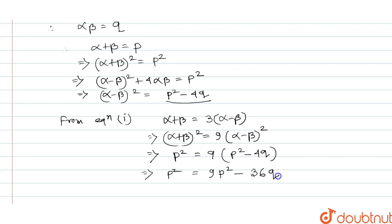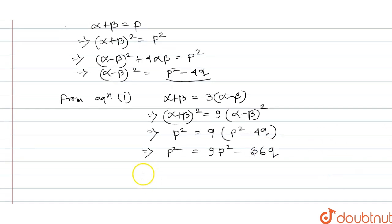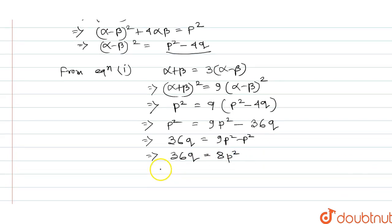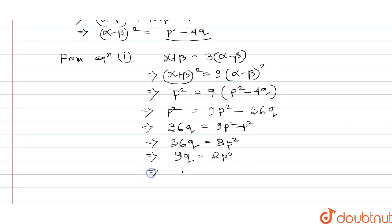So p squared equals 9p squared minus 36q. Rearranging: 36q equals 9p squared minus p squared, which gives 36q equals 8p squared. Dividing both sides by 4: 9q equals 2p squared. Therefore, 2p squared equals 9q. Hence proved.